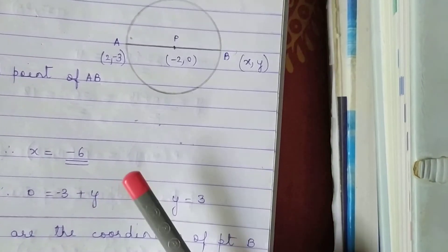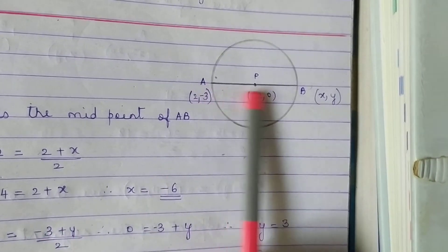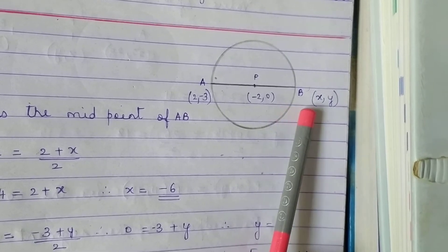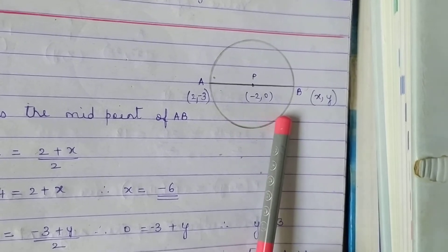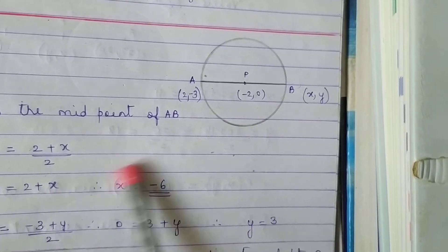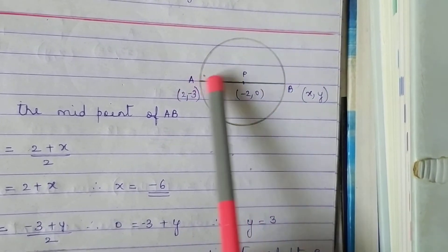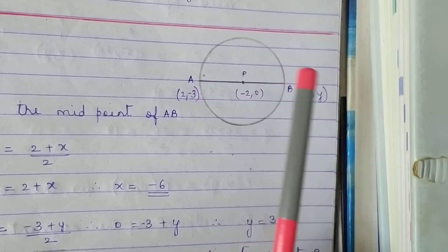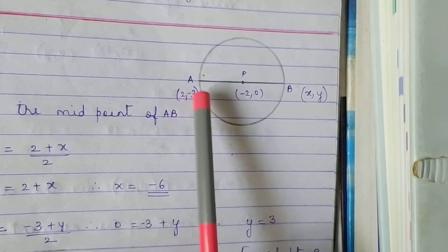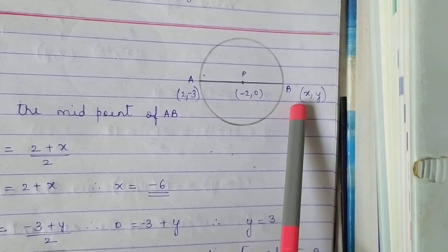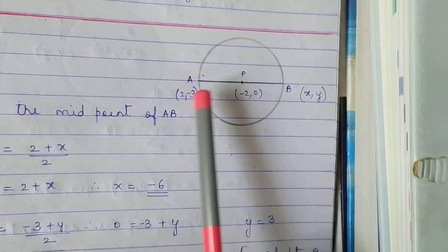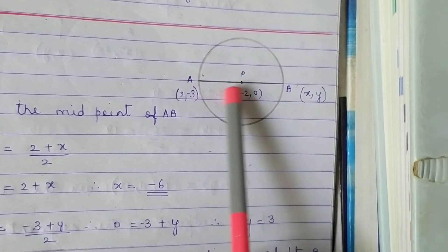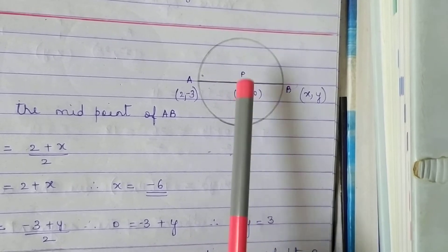We go to question number 4. Point P is the center of a circle and AB is the diameter. Find the coordinates of point B, if the coordinates of A and P are (2, -3) and (-2, 0) respectively. This question can be asked in different ways: you may be given two coordinates and asked to find the third, or given M is to N and asked to find coordinates, or given all three to find M is to N. Here you have coordinates of A and coordinates of P, so you have to find coordinates of B. Since AB is the diameter and P is the center, P is the midpoint. So we will use the midpoint formula.